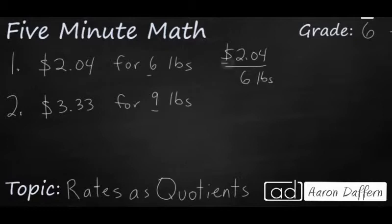$2.04 by six pounds. So our two units, like I said, are dollars and pounds. And so let's just set up a traditional division problem here. Let's keep our decimal there. Six goes into 2 three times. It's 18, 24.